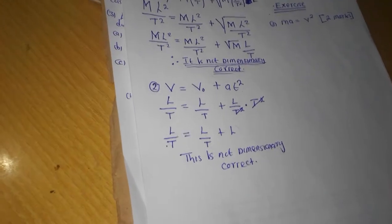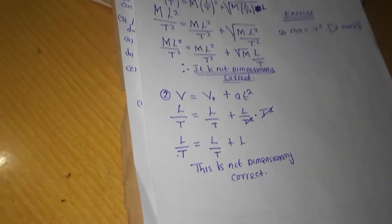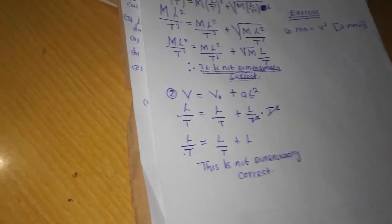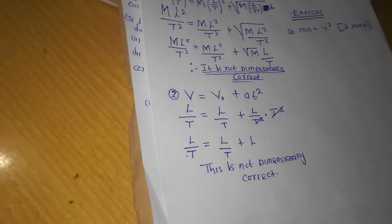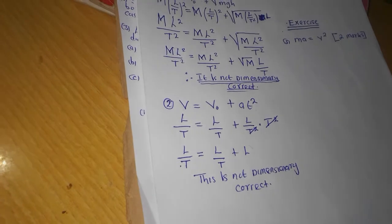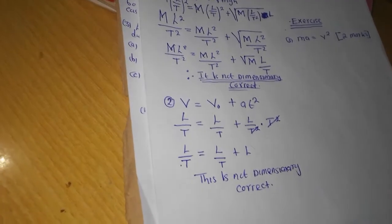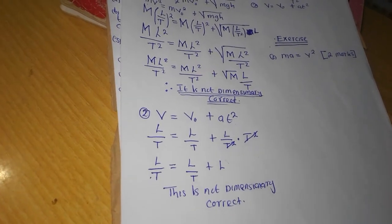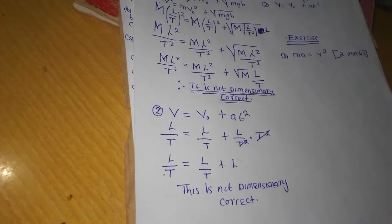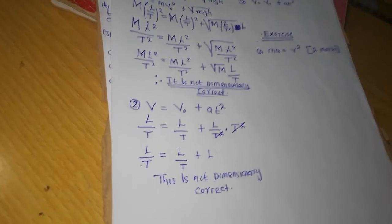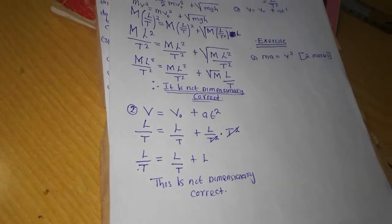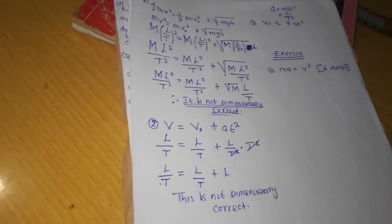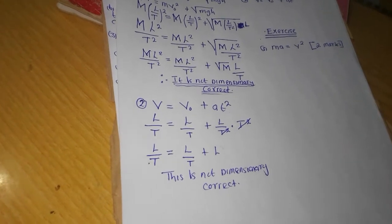Dimensional analysis is all about proving that a particular formula in physics is able to hold — it must be true. Physics is interesting, and the interesting part is that you can prove something and that thing must hold. We have proved these formulas, and we have discovered that some formulas were able to hold and some were not. Just know the dimensions and know how to come up with those dimensions using units.